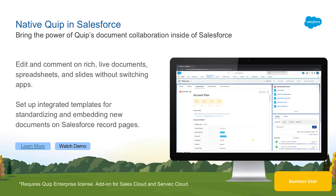All the back-and-forth collaborative work related to taking action as a team. The Quip document lightning component helps increase clarity and drive transparency during all phases of your customer relationship. Instead of toggling between applications to reconcile data with related notes and discussion, you can now access your data and collaborative work side-by-side in Salesforce.